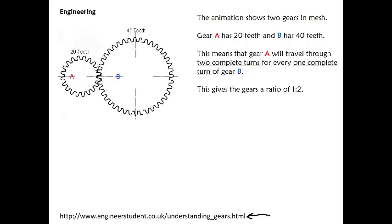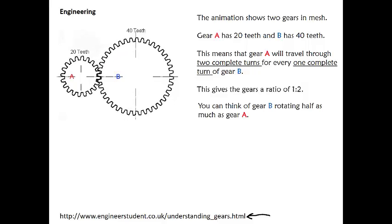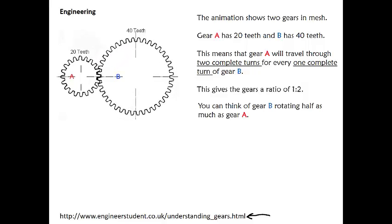This gives the gears a ratio of 1 to 2. You can think of gear B rotating half as much as gear A.